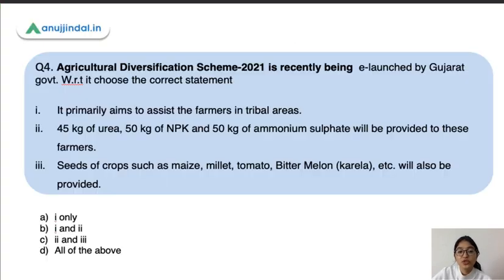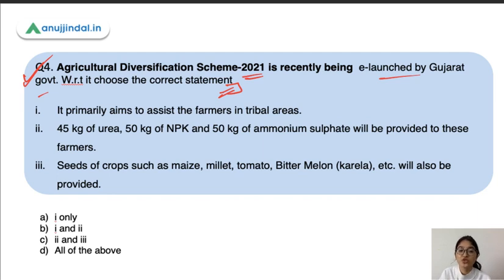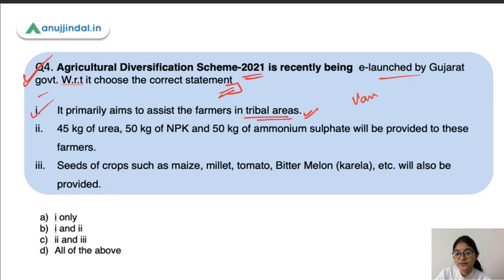Moving to the fourth question: the Agriculture Diversification Scheme 2021 was recently virtually launched by the Gujarat government. Choose the correct statement about it. The first statement — that it primarily aims to assist farmers in tribal areas — is absolutely correct. This scheme is launched for Banbandhu farmers, who are tribal people.